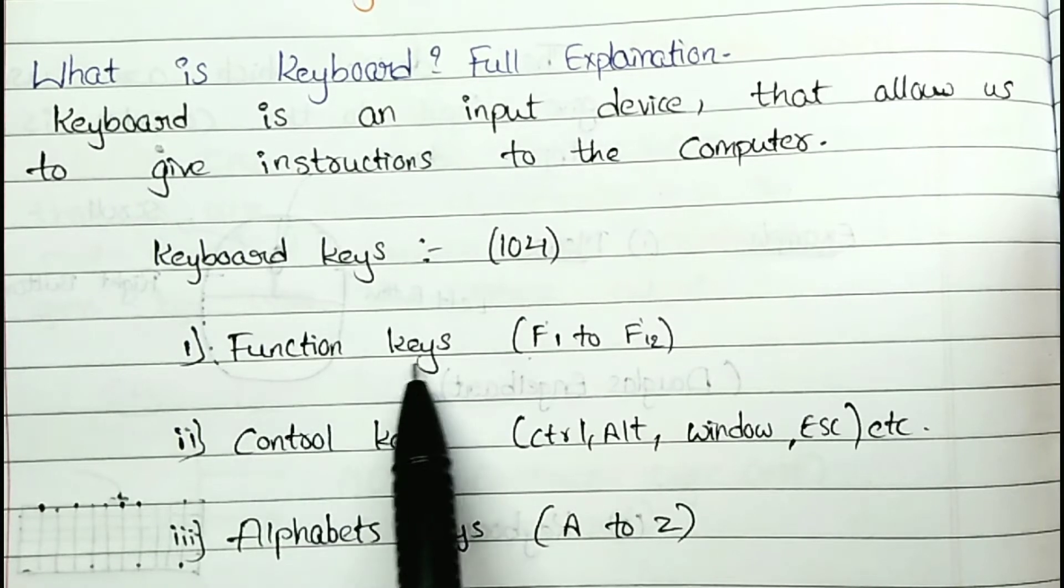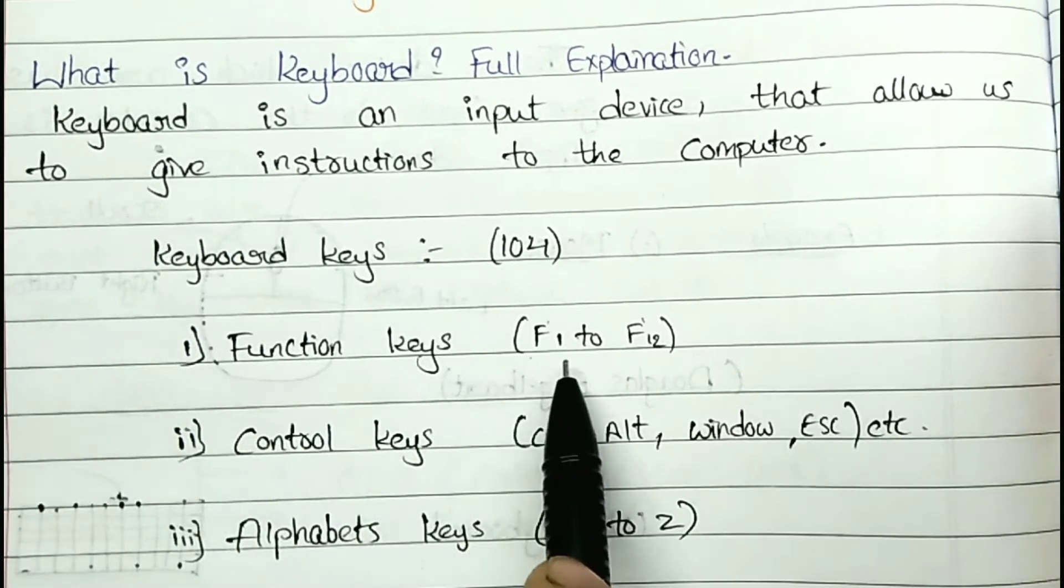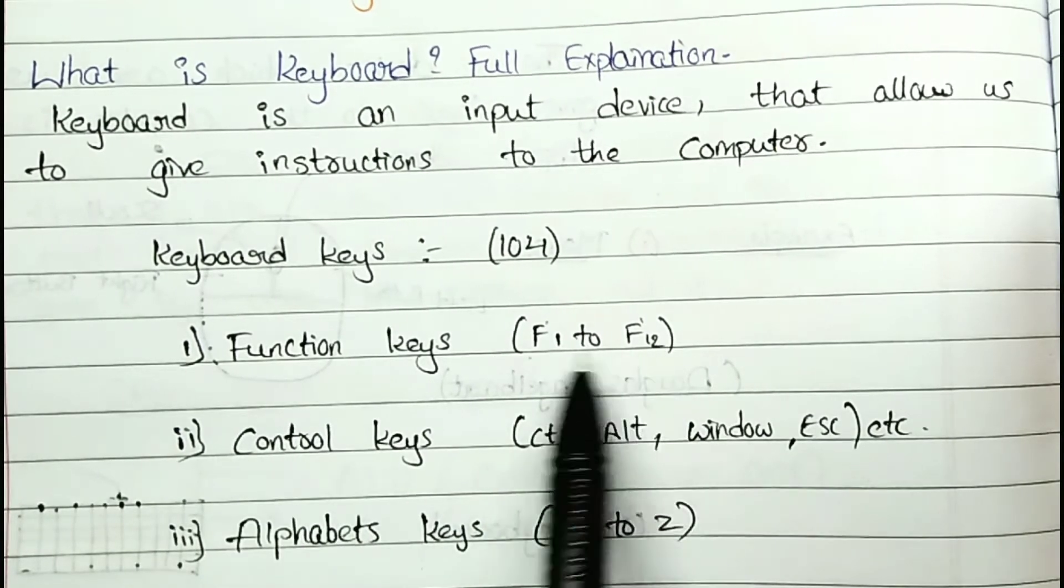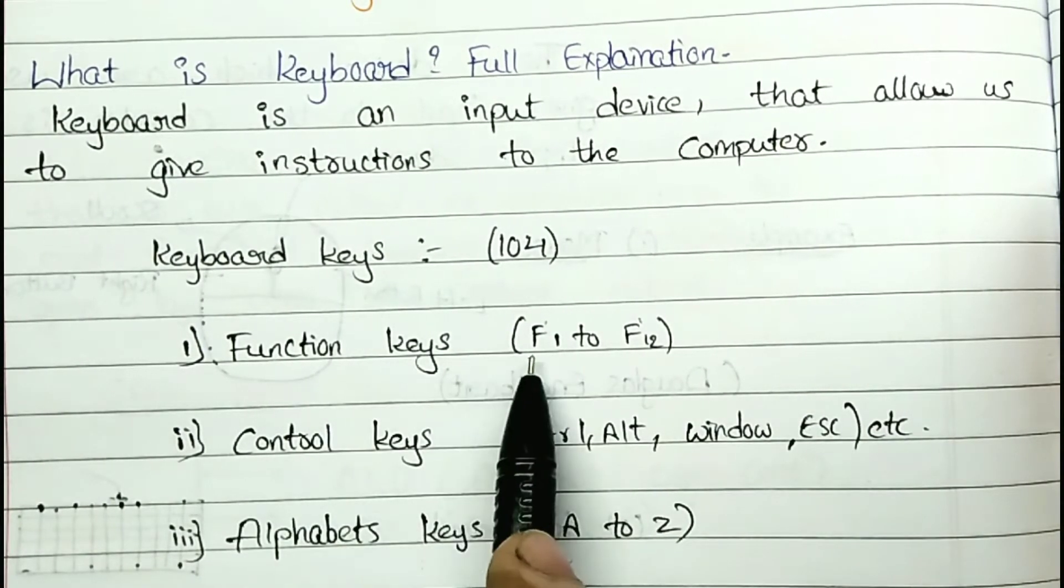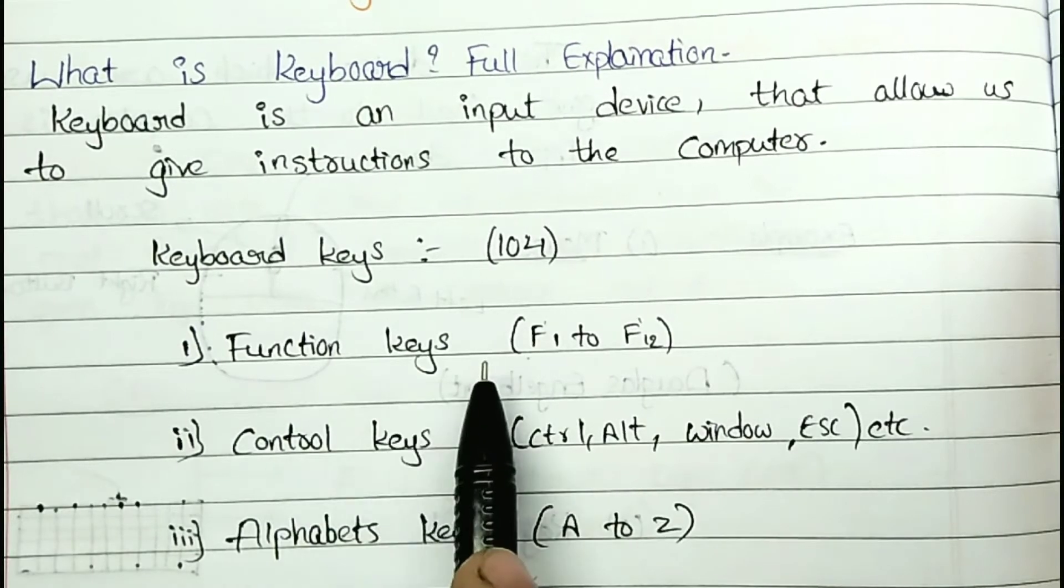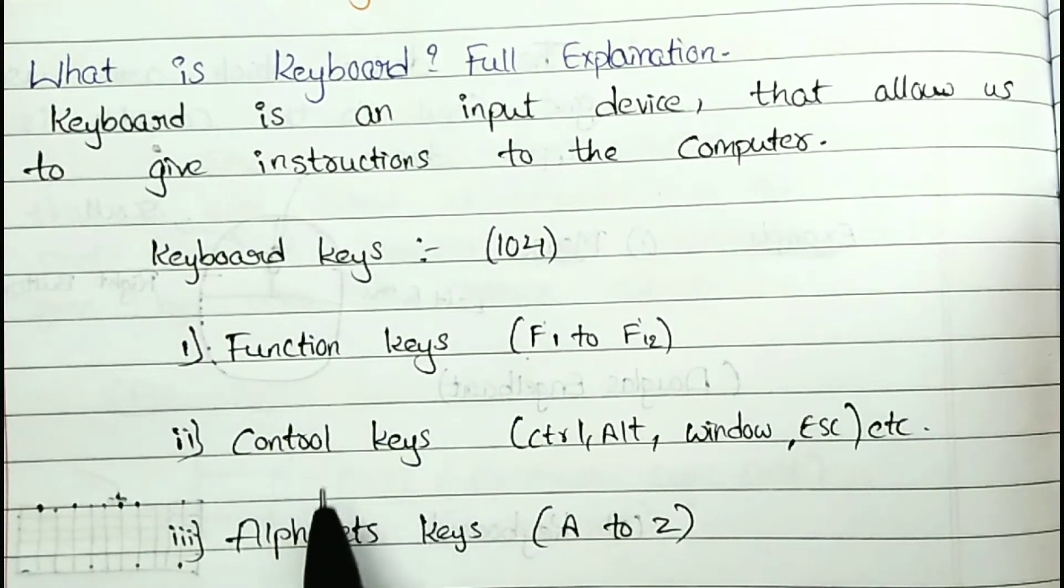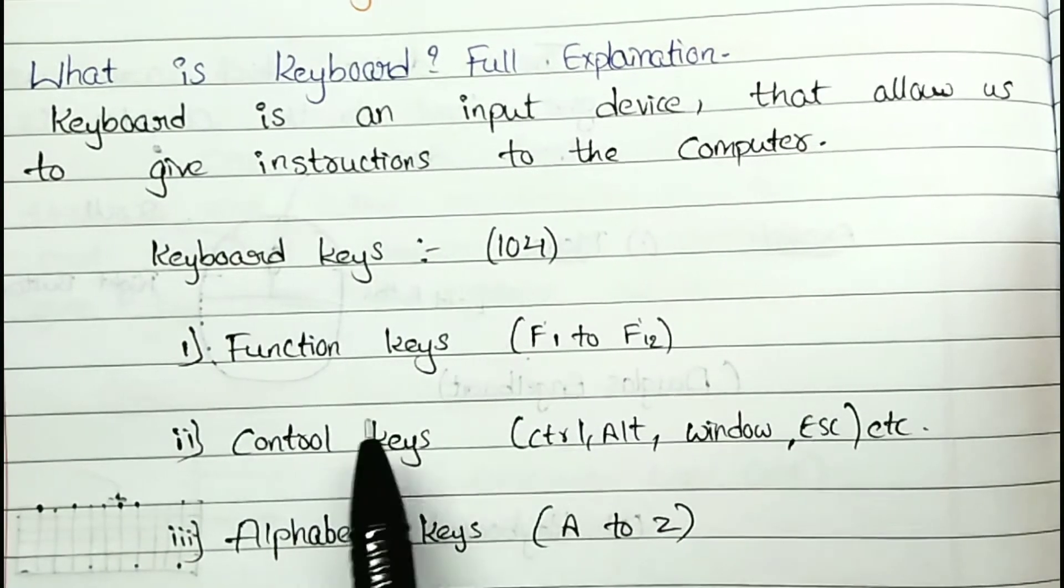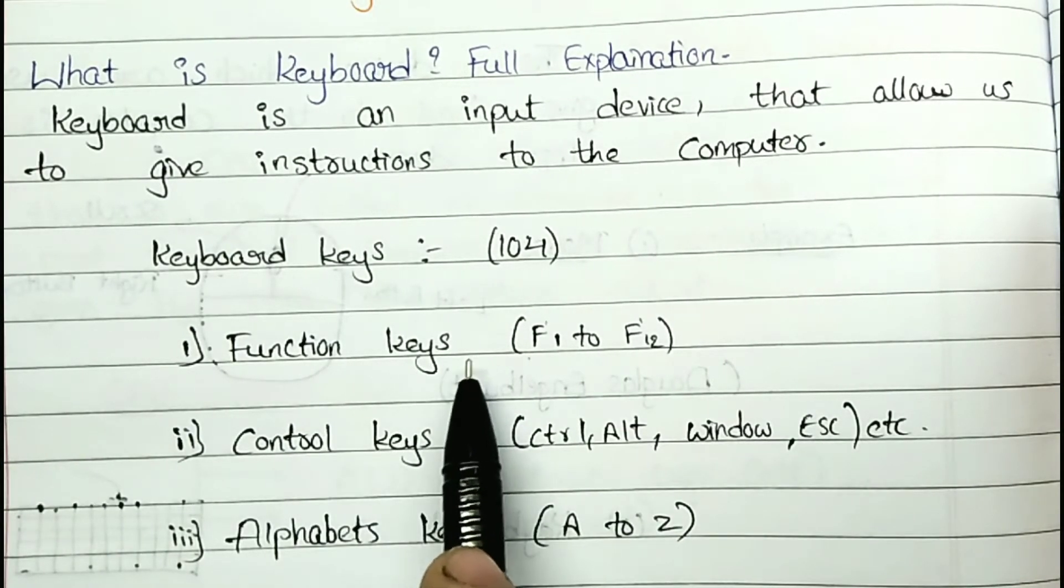The main function keys, function keys F1 to F12. This is the function keys in the top, 12 keys. We will discuss the keyboard. First of all, we will learn about all those things. Function keys F1 to F12. It is the keyboard and top place.